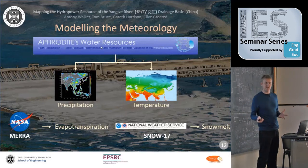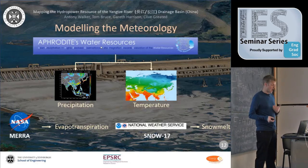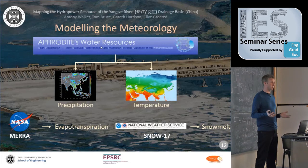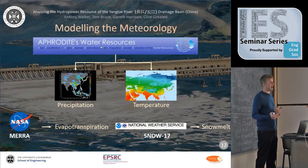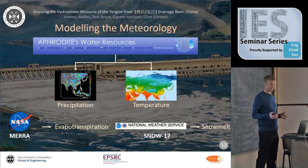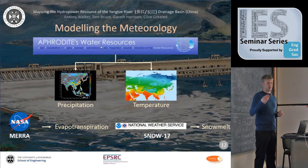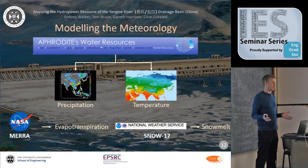Now we've modeled the terrain, we need to model the meteorology. We've used a dataset called Aphrodite, a Japanese resource at quite high resolution dating back to the 1960s and 70s, giving us a long time series. We're interested in precipitation — rainfall and snowfall — and temperature, which influences snowmelt and evapotranspiration, the water lost back to the atmosphere before it reaches the sea.